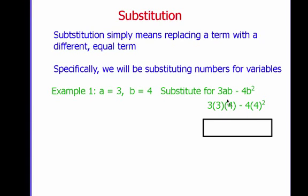Where I see b, I put in 4 and I put that in parentheses. The reason is that this is 3 times a times b. So we want to make sure that we see that it's 3 times 3 times 4.